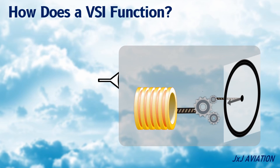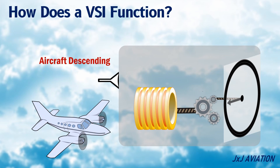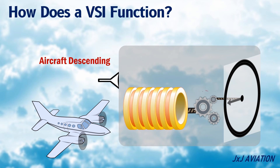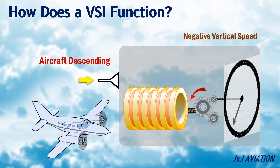Similarly, when an aircraft descends, the pressure increases, causing the capsule to expand. This will cause the needle to deflect downward, indicating the speed at which the aircraft is descending. Air then enters the case through the calibrated nozzle, which increases the pressure inside the case, again providing a more stable indication of the vertical speed.